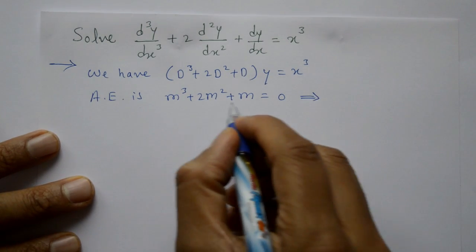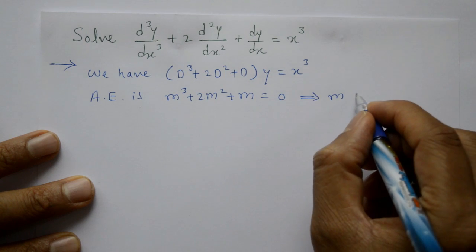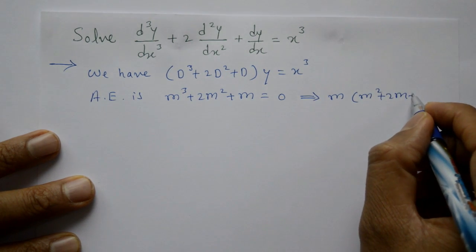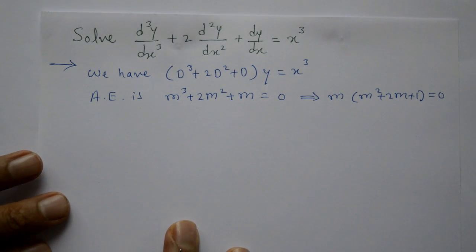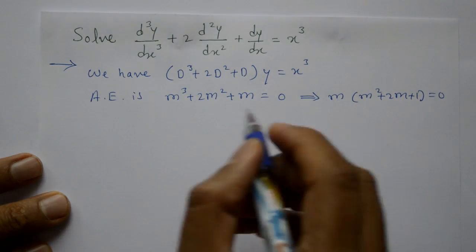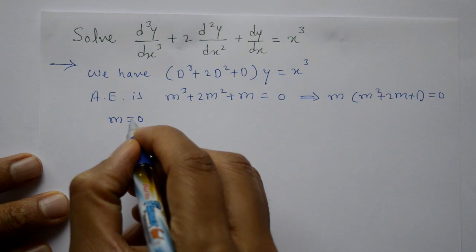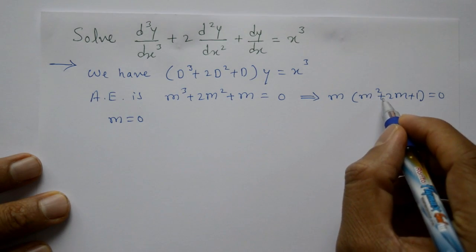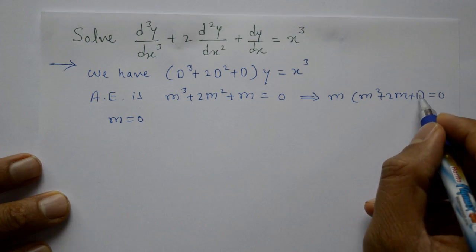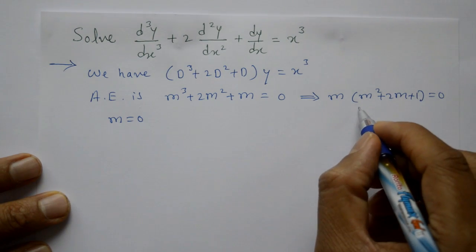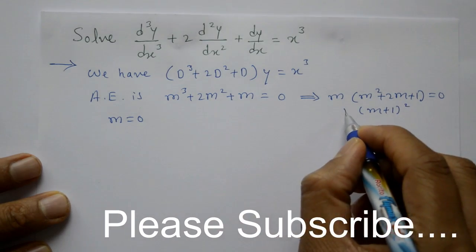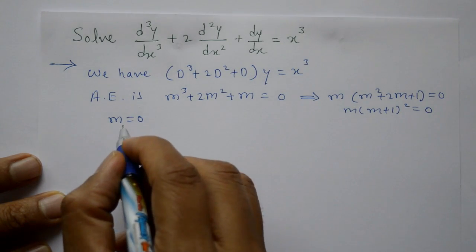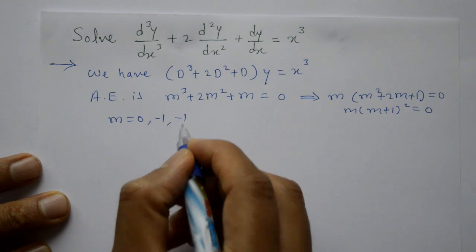All three terms have m as a common factor. Take m common: m(m² + 2m + 1) = 0. One root is m = 0. And m² + 2m + 1 = (m+1)² = 0, giving next roots m = -1, -1.